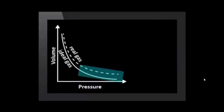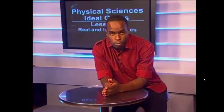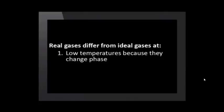So at high pressures, a real gas has significantly more volume than an ideal gas. Let's summarize the conditions under which real gases differ significantly from ideal gases and why this is so. Real gases differ from ideal gases at low temperatures because at low temperatures, gases change phase. And so, the gas laws no longer apply.